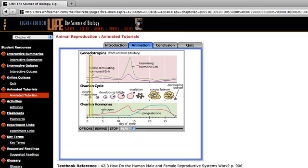The ovarian cycle is controlled by the interplay of hormones from the pituitary gland and from the ovary itself. A few days before the beginning of the cycle, the anterior pituitary begins to increase its secretion of two hormones, follicle-stimulating hormone, FSH, and luteinizing hormone, LH.